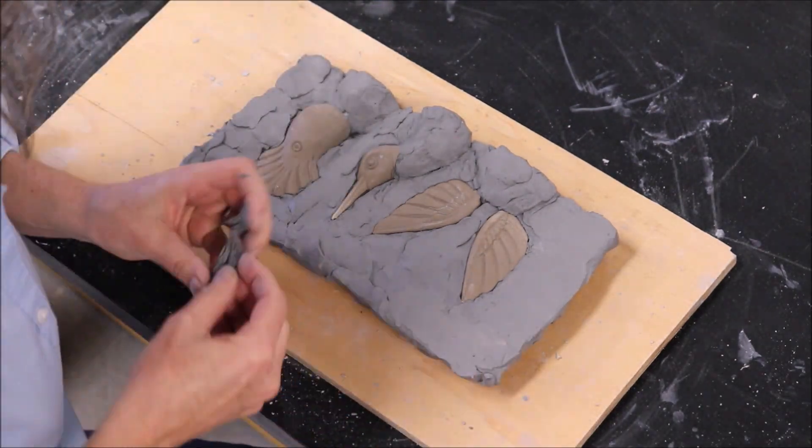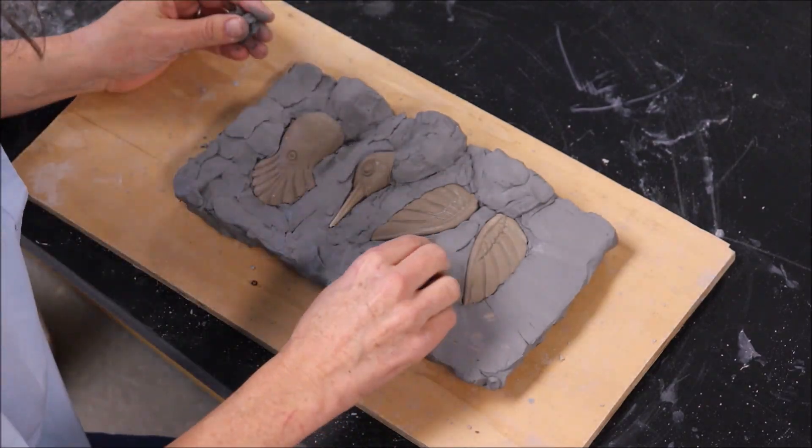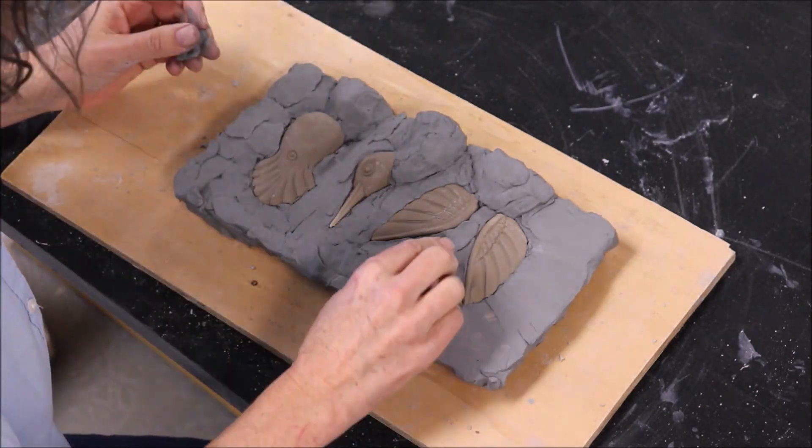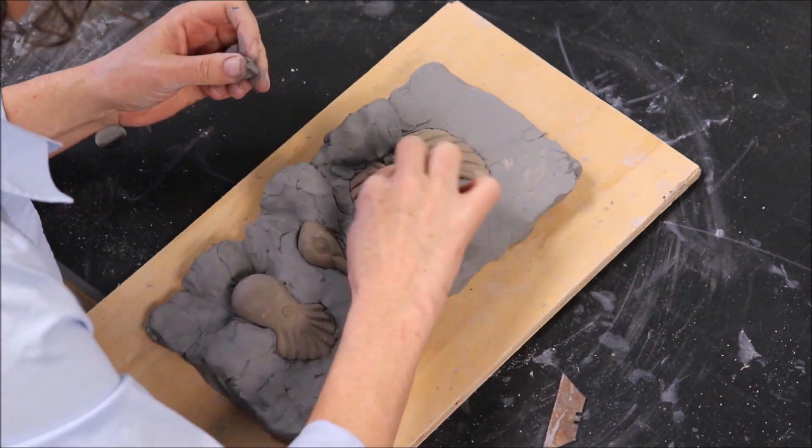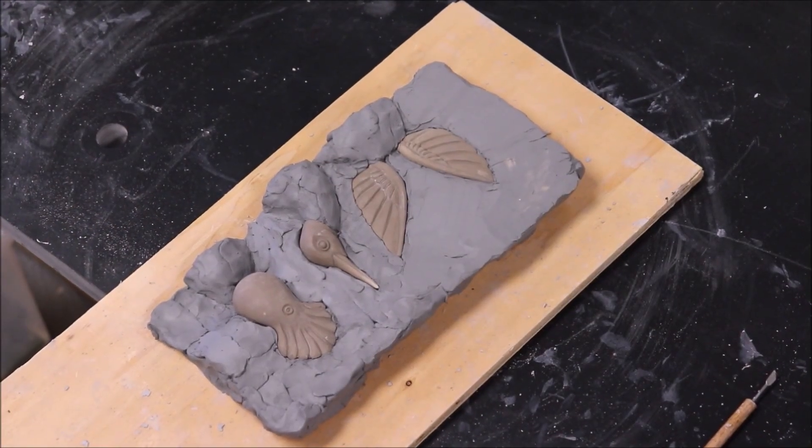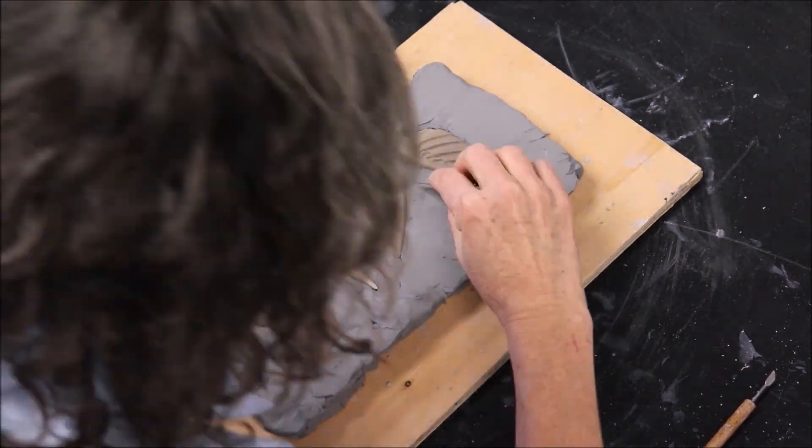As I stated earlier, the hummingbird is actually greenware. When I make molds, I do prefer to make them from my clay pieces that are greenware, in the greenware stage. Generally, I like them to be leather hard. It's okay if they're bone dry, but leather hard is the best.